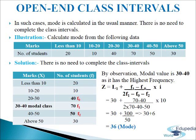F0 is 40, which precedes the highest frequency, and F2 is 50, which follows the highest frequency. We write the mode formula and put these values in. After calculation, we get mode = 36 for this particular illustration. This is how we calculate mode in open-end class intervals.